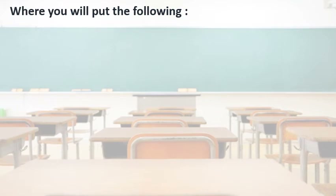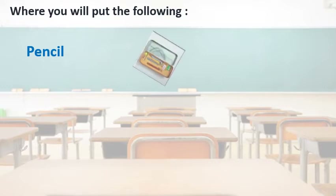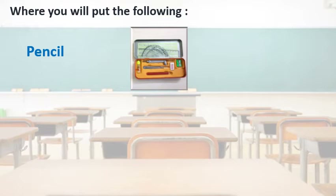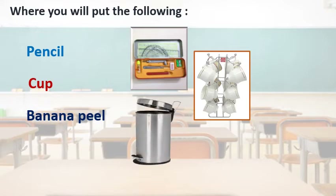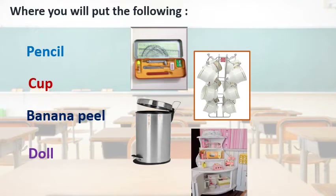Where will you put the following? Dear students, here some things are given and we have to say where we put all these things. First one — pencil. Where do we keep our pencil? Correct — in the compass box, or we call it a geometry box. Second thing is a cup — where do we keep the cup? On the cup stand. Next one — banana peel, the cover of the banana — that we will put in the dustbin. Doll — after playing with the doll, we have to keep it in the doll house or the place where we keep all our toys.